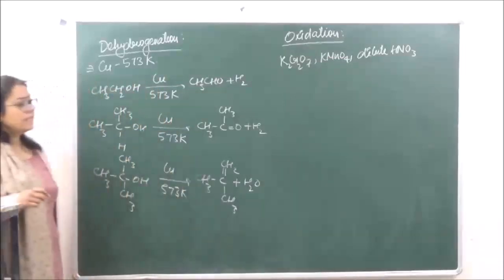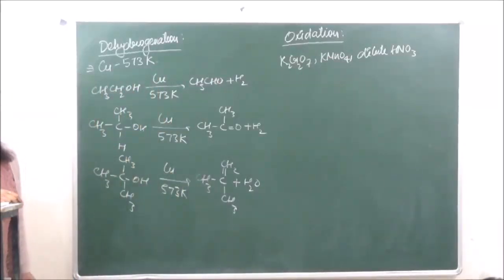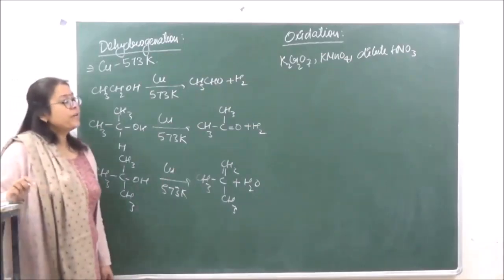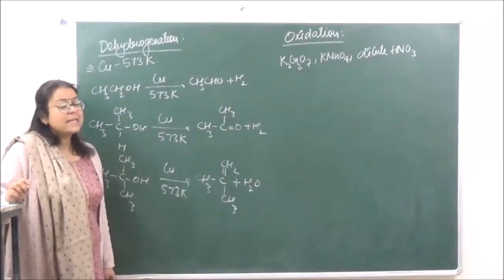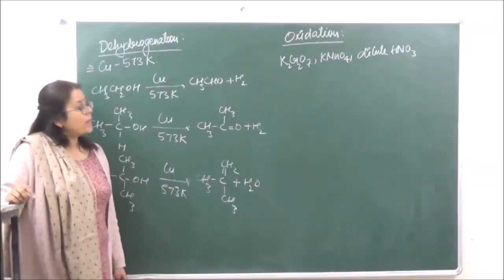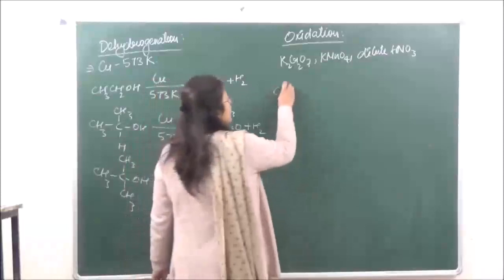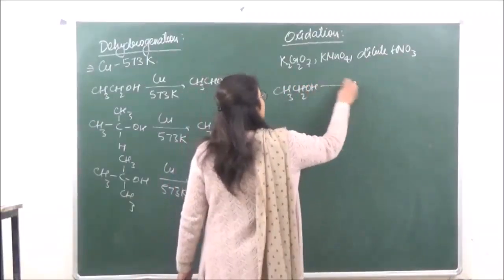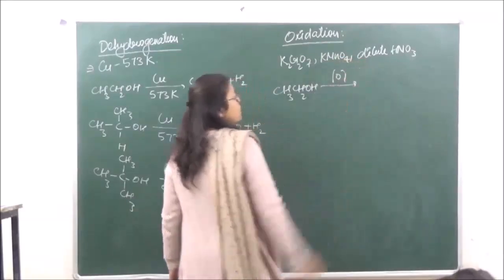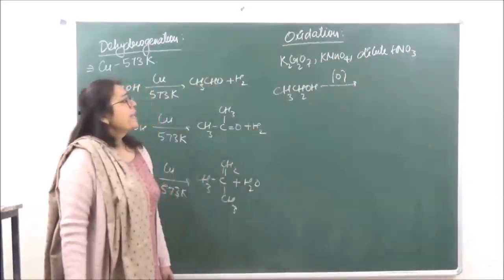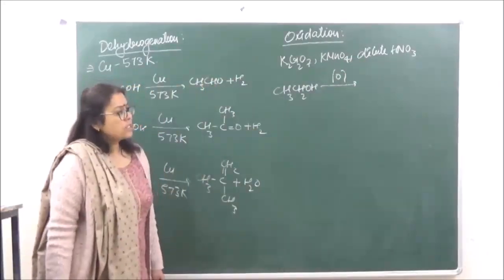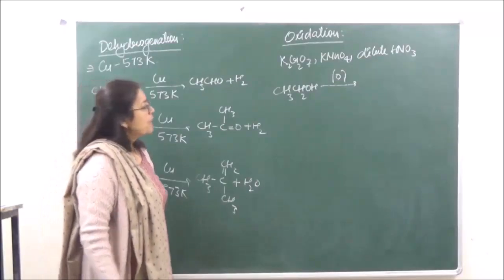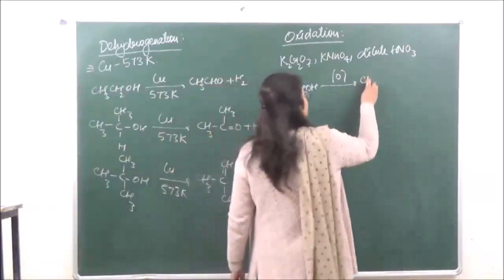We can also use dilute nitric acid (dilute HNO₃). When we are oxidizing the primary alcohol, it is going to get oxidized to aldehydes and then it will get oxidized to acids. So if we are taking a primary alcohol CH₃CH₂OH and doing oxidation in presence of any of the oxidizing agents mentioned, this gives us CH₃CHO.